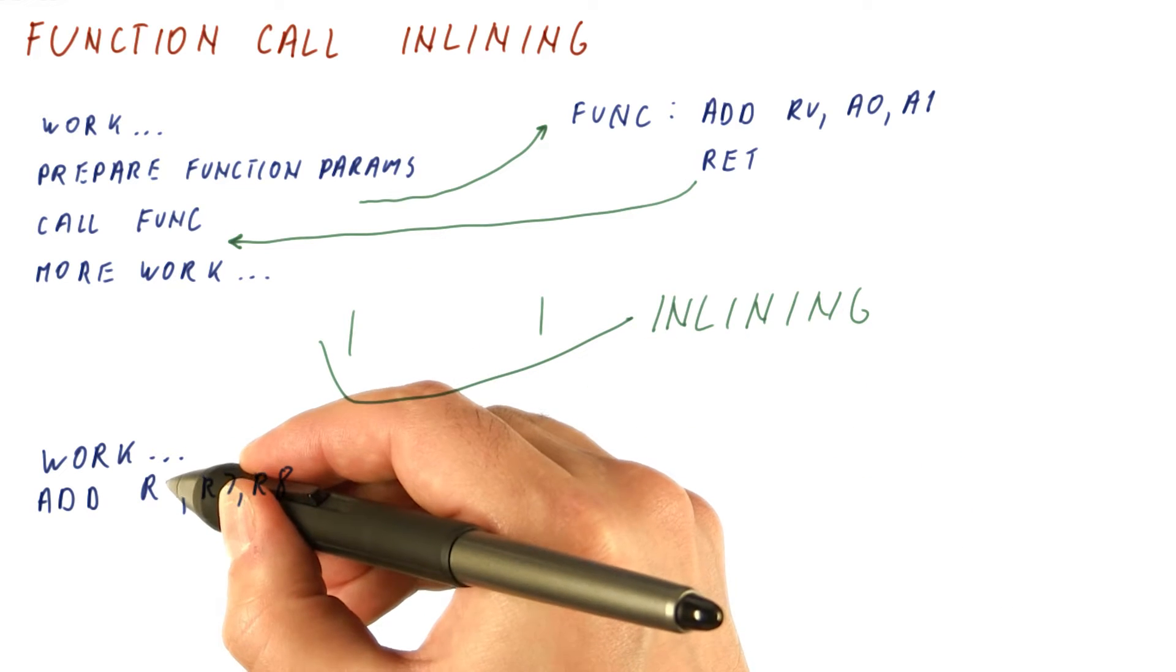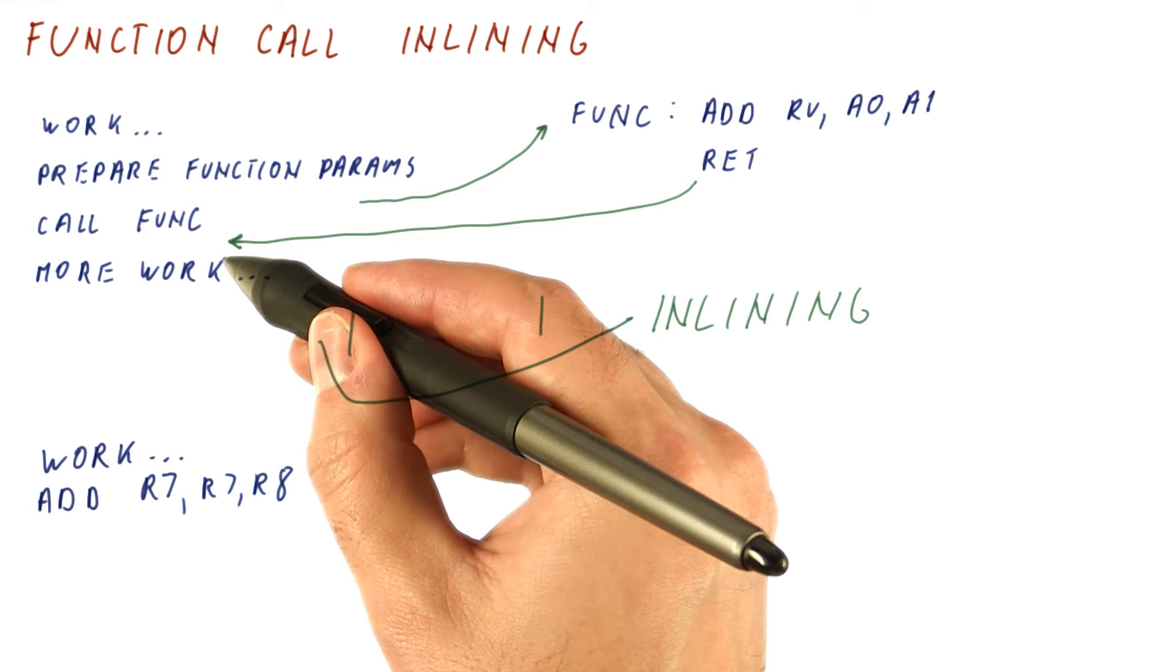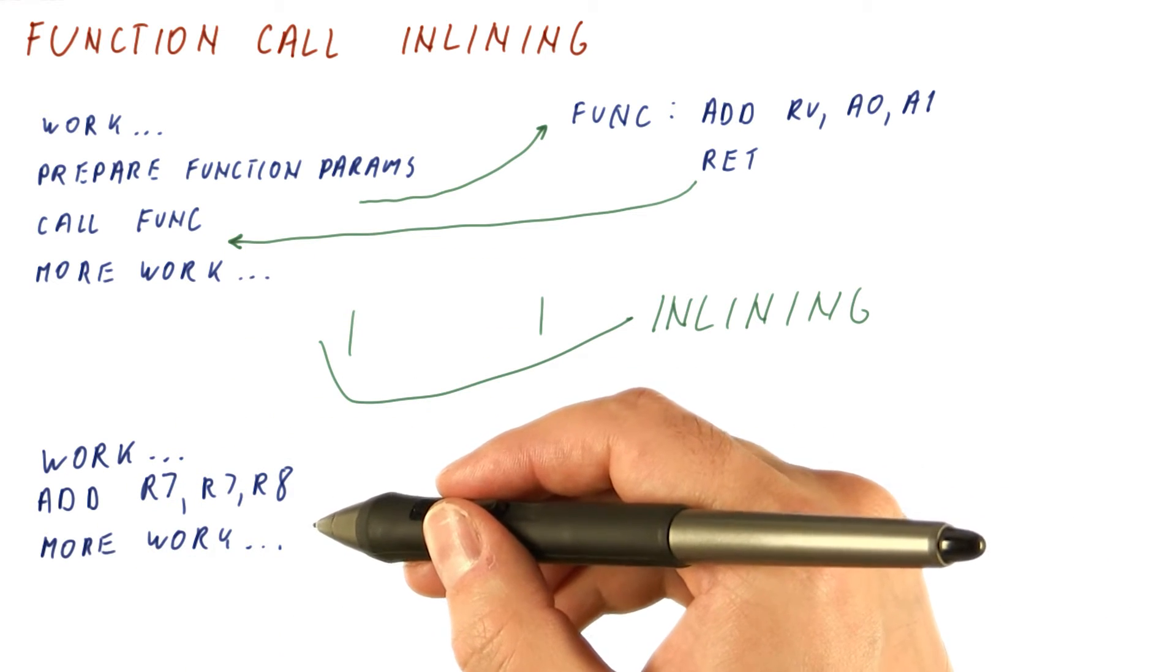We put the result exactly where we need it, for example R7, instead of having to maybe copy from RV to R7, and then we can continue with our work.